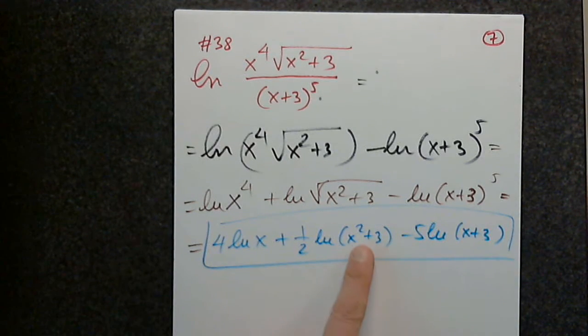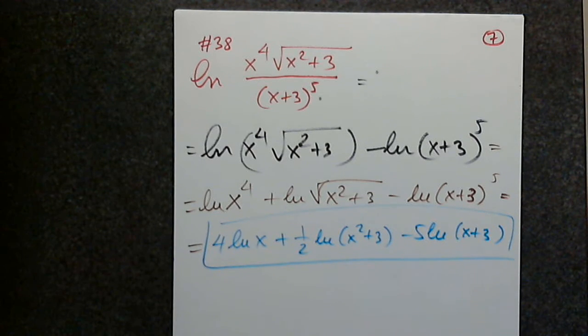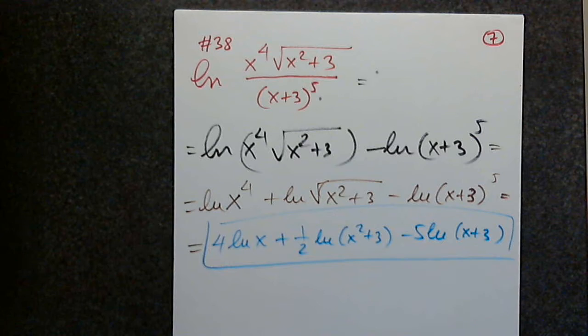Do not get into the trap. You cannot do anything with the sum. Ln of x squared plus three cannot be further simplified. Ln of x plus three cannot be further simplified.